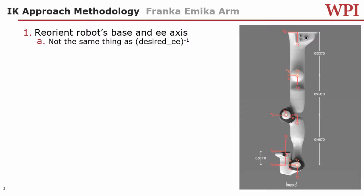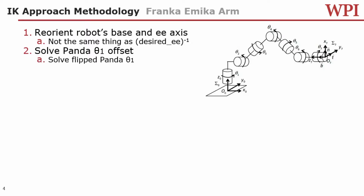The first step of the inverse kinematics is to flip the robot. This will allow us to use our inverse kinematics methodology on this robot. The first step to solve this robot is to set the theta 1 offset. The Panda is a 7 DOF arm, and an end effector frame transform only provides for 6 parameters. We therefore have to set a 7th parameter, and we decided to set the theta 1 offset. This allows us to solve for theta 1.